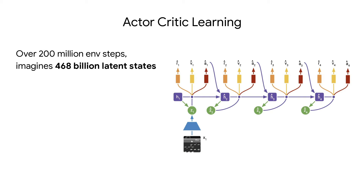Given the world model, we want to derive behaviors from it. For that, we learn an actor-critic algorithm from trajectories imagined using the world model. During the 200 million environment steps of an Atari game, DreamerV2 imagines almost 500 billion steps using the world model. This is possible because of the compact representations that allow predicting thousands of trajectories in parallel using a large batch size.